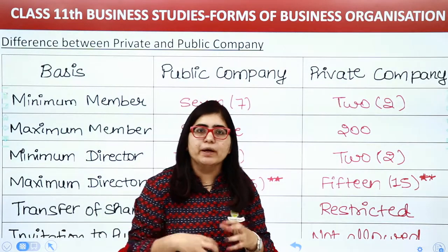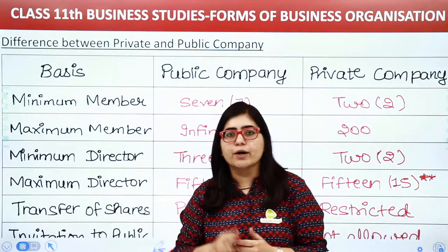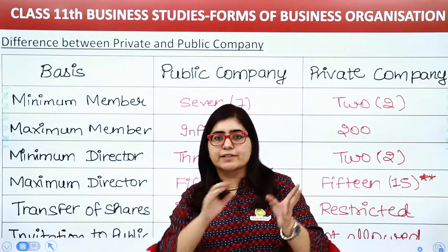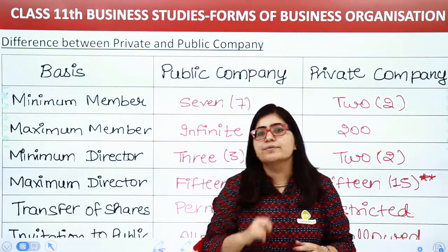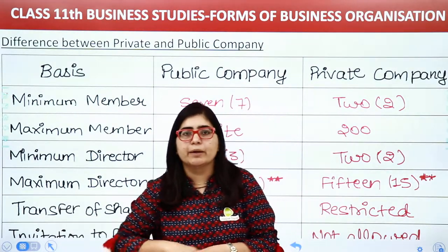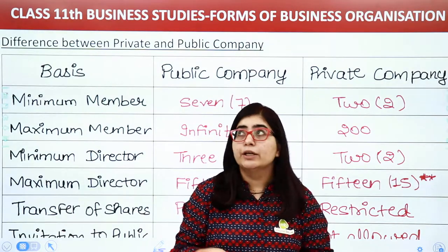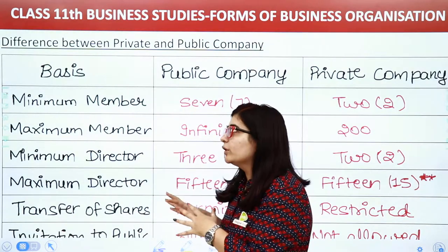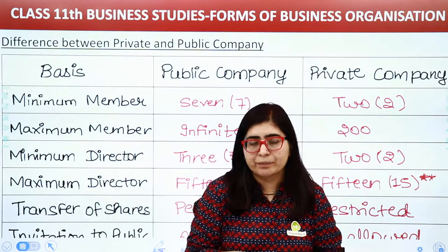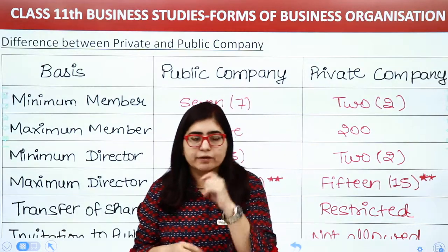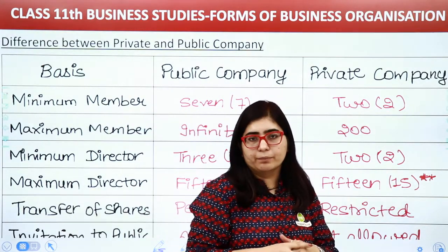In my last video, we talked about joint stock company — its features, advantages, and disadvantages. Then we talked about two types of companies: one was private company and another one was public company. There is also one another type of company — one person company.